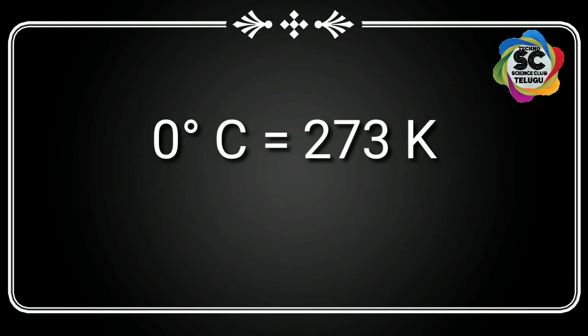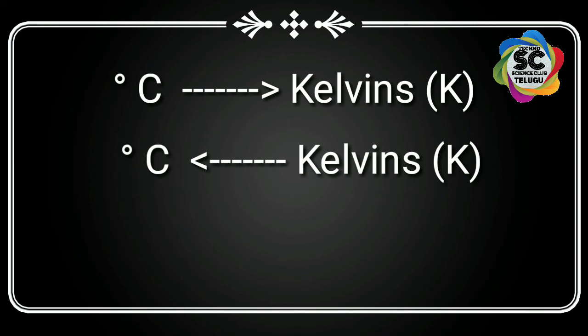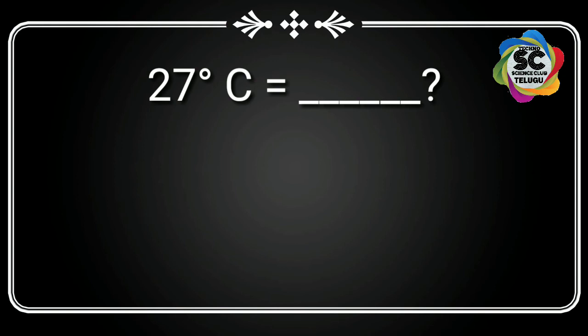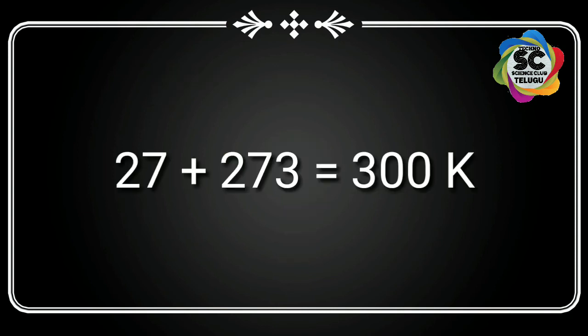Zero degree Celsius is equal to 273 kelvins. We can convert temperature from degree Celsius to kelvin and from kelvin to degree Celsius. For example, to convert 27 degrees Celsius into kelvin, we add 273: 27 plus 273 equals 300 kelvins.